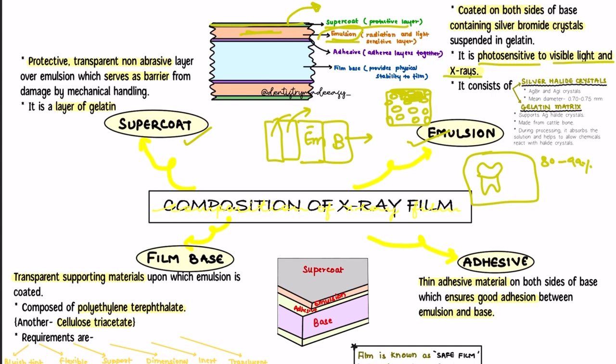The next component of the emulsion layer is the gelatin matrix. The gelatin matrix supports the silver halide crystals, keeping the silver grains evenly dispersed. This gelatin is made from cattle bone. During processing, the gelatin absorbs the processing solution and allows the chemicals to react with the crystals, which in turn helps in the formation of the image.